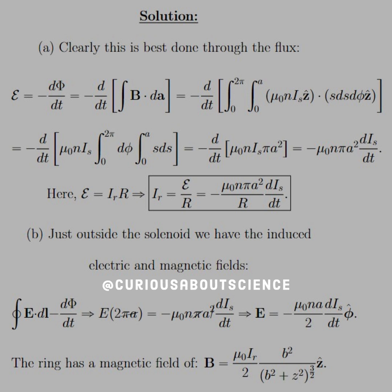And so big R, or excuse me, the current IR is equal to E over big R. And so you plug it all in, and you see constants over R, dIS/dt. No big deal. Pretty quick to find.